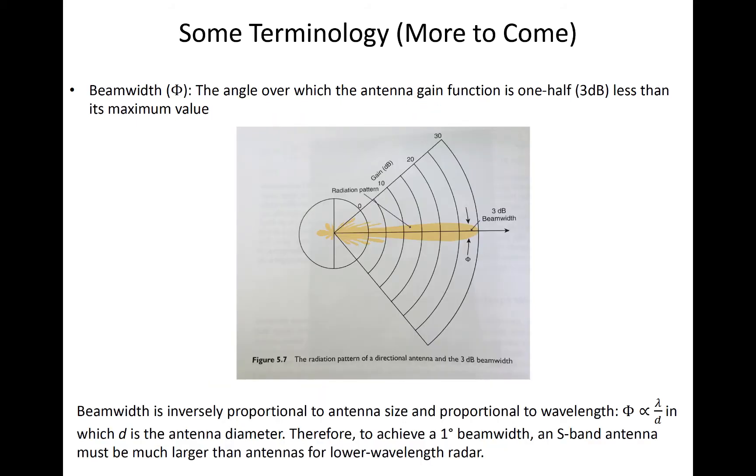Finally, the beam width is the angle over which the antenna gain function is one half of its maximum value, which is located along the center of the main lobe. And we assume that this antenna gain function from which we get the beam width is essentially Gaussian distributed across the ray.